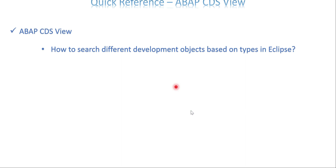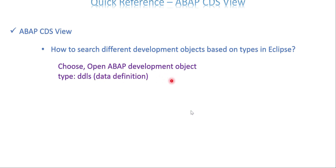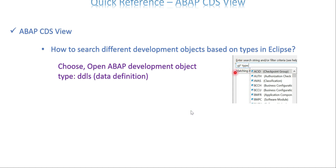How do you search for different development objects based on type in Eclipse? This applies not only to CDS but all object types. Open the development object browser and type the name partially. Start with 'Z*' and then type the type, for example 'DDLS' to find only Data Definition objects. If you type a name, then a space, then 'type:', and press Ctrl+Spacebar, it will list all possible applicable types. Based on that you can find a function module, class, or program, since Eclipse supports many different object types.